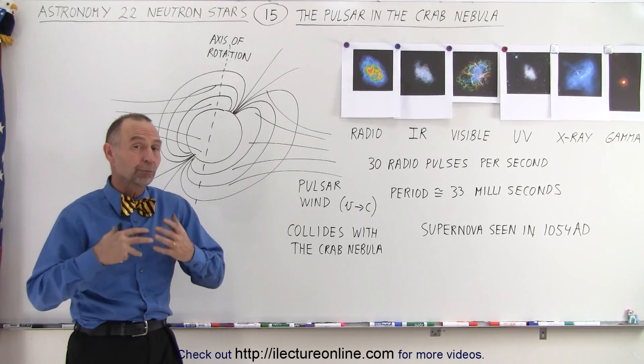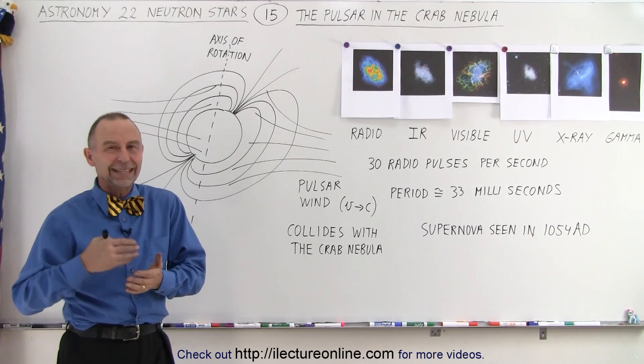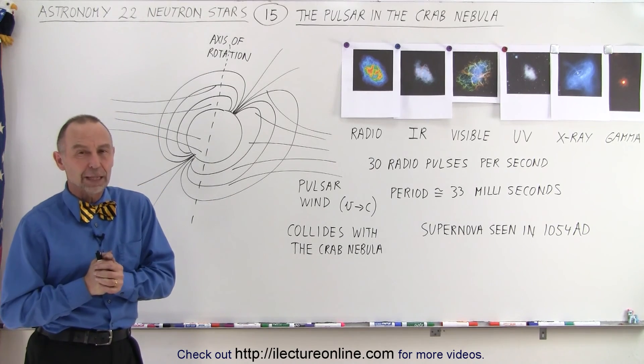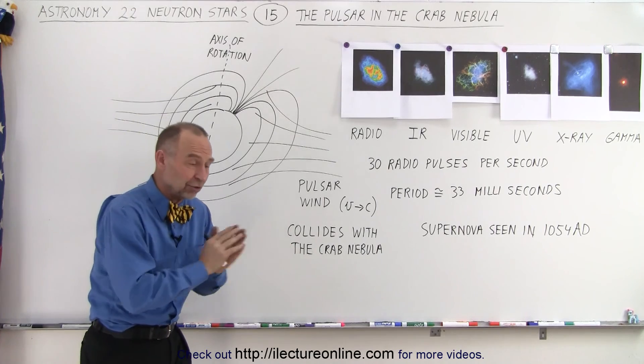The Crab Nebula is a result of a supernova that was seen in 1054 AD. It was from an event that was about 6,000 light years ago.